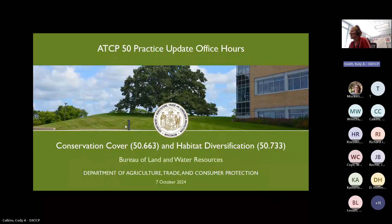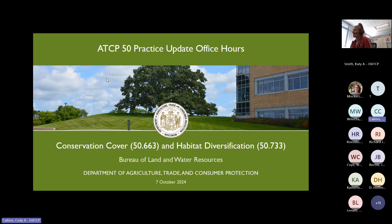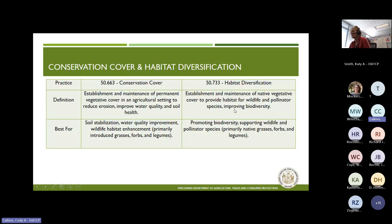Cody Calkins is going to give us a technical overview as well as a review of available resources for implementing conservation cover and habitat diversification. Like we're talking about today, conservation cover and habitat diversification are long-term vegetative practices with a couple of different purposes. If we're talking to a landowner and they want to do some kind of long-term vegetative practice, they're not interested in CRP and you have some small areas that you want to put into this kind of cover.